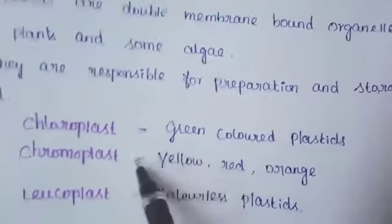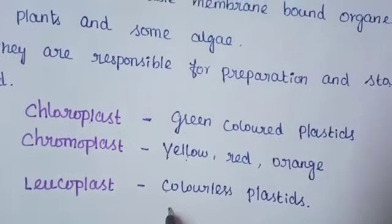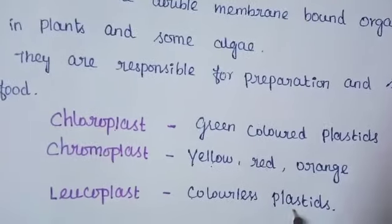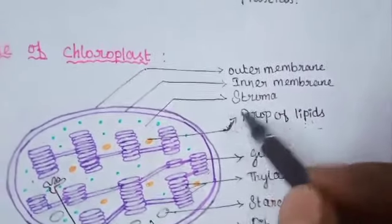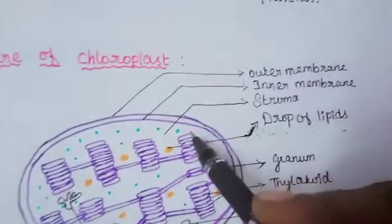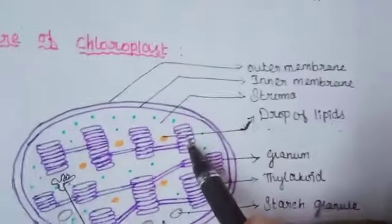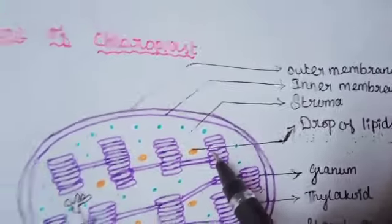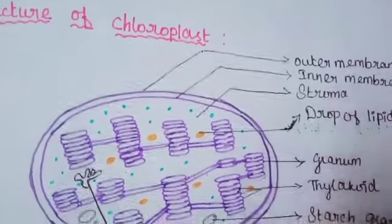Chloroplast is green-colored plastid, chromoplast is yellow, red, and orange colored, and leucoplast is colorless. Next, the structure of chloroplast — this is an important topic with diagram questions. The chloroplast has an envelope, stroma, thylakoids, and granum. Each disc-like structure is called a thylakoid, and all together they form the granum.